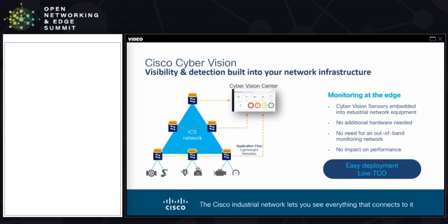Let me introduce Cisco CyberVision. It has two main components: the CyberVision Center, which runs on a large UCS server inside the data center, and CyberVision sensors installed on the network devices themselves that send lightweight application flow data back to the center. Because the sensors are embedded in network devices, there is no additional hardware required, no out-of-band network needed, and no impact on network performance — making it very easy to deploy with low TCO.